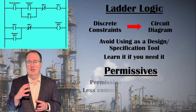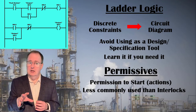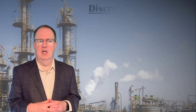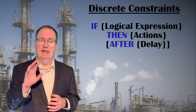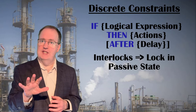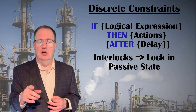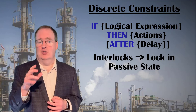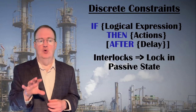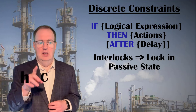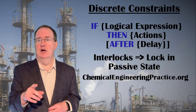Also in the text is a section on permissives, which are discrete constraints to allow something to start rather than shut it down — another specialized case of discrete constraints like interlocks, but which doesn't come up nearly as often. Today we learned what a discrete constraint is and how to express it in an if-then-after statement. We learned that an interlock is a discrete constraint that locks a device into its passive or safe state. We looked at examples teaching us to consider equipment failures when writing interlocks, how it's possible to interlock ourselves into a corner, and how to use interlock delays to get out of that corner. Chapter six has more examples and exercises. Look for the full text and more videos at chemicalengineeringpractice.org. I'm Tom Meadowcroft — I hope to see you again soon.